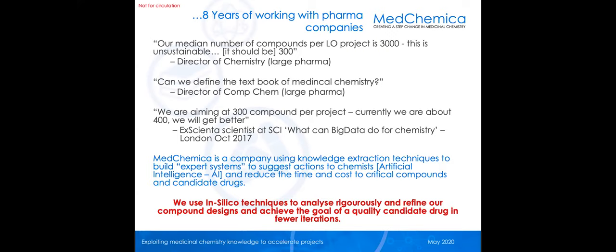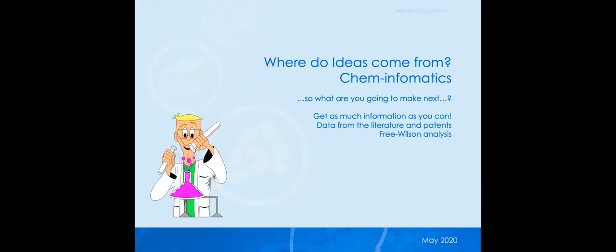There is a realisation that we need to do lead identification and lead optimization now in fewer than hundreds of compounds. We need to leverage the power of our data sets, computers, and our creativity as human beings to do fewer design-make-test-analyse cycles and make fewer compounds. MedChemica is one of those companies building expert systems that suggest actions to chemists — the easiest way to explain it is like Amazon saying 'people that bought these also bought these.' Our software says: people with compounds like yours fixed the metabolism by making these compounds.